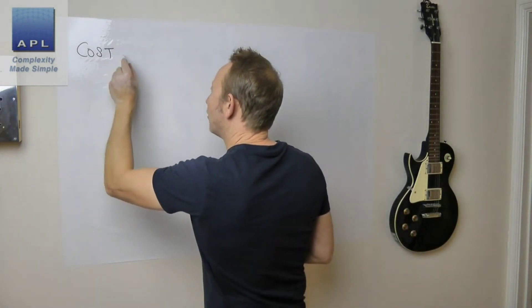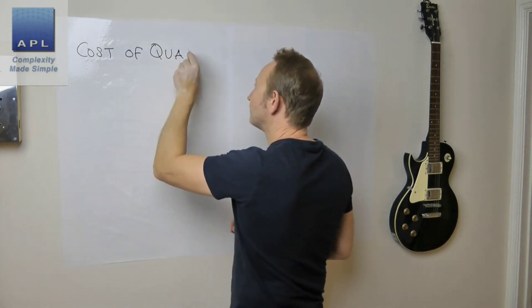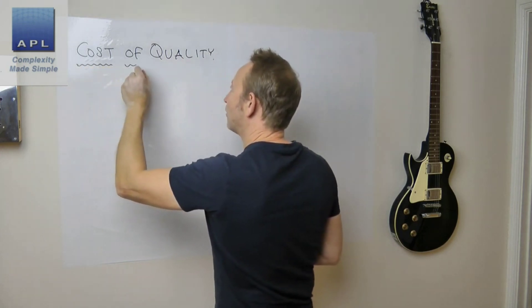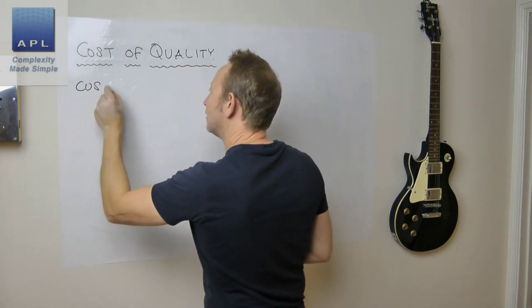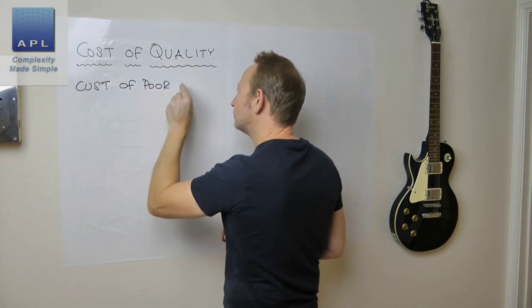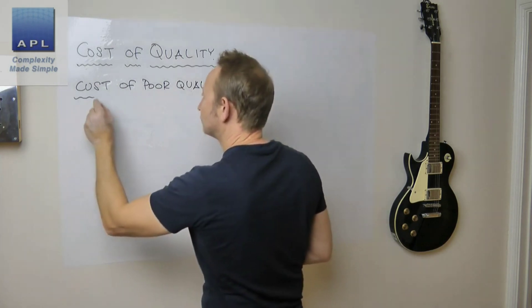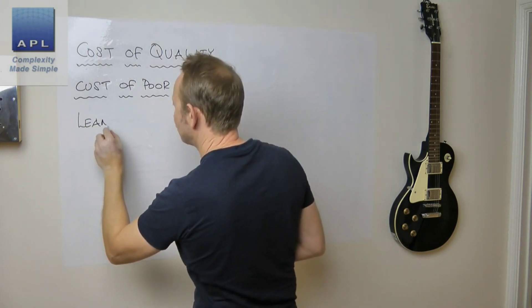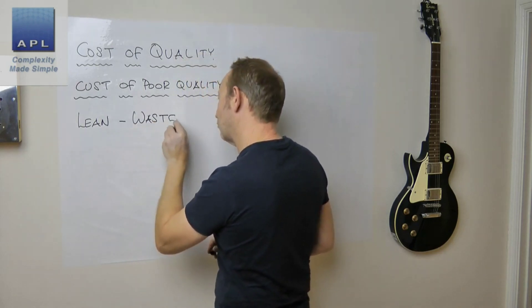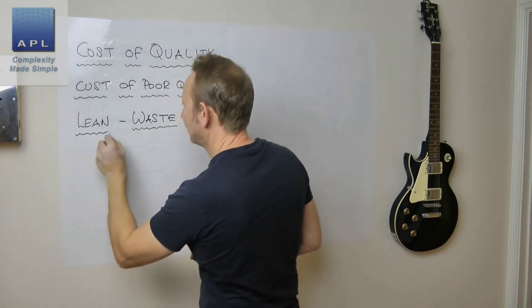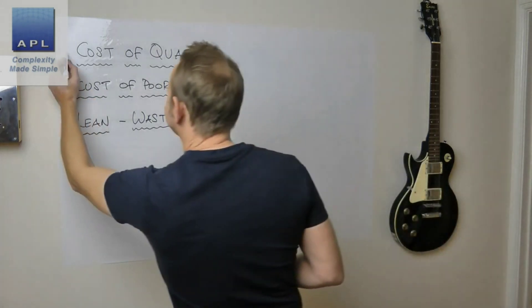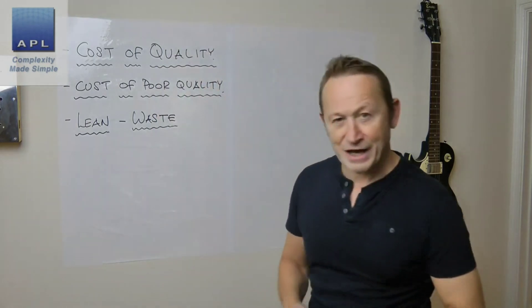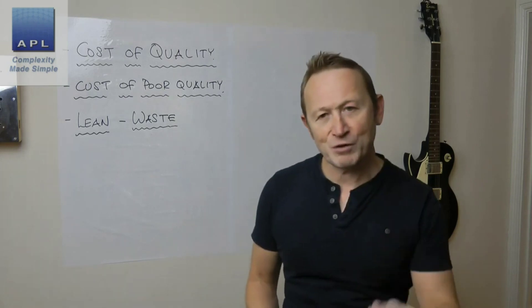The cost of quality is different from the cost of poor quality. We're also going to look at what lean does, because lean really doesn't look at cost — it looks at waste, which is a completely different approach. I've deliberately put them in this order, and I think the most important one is the cost of quality.